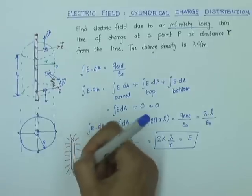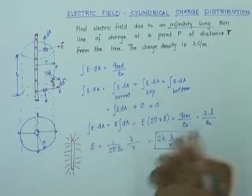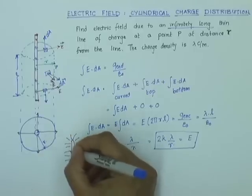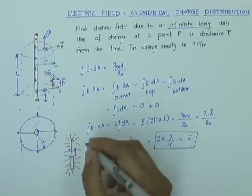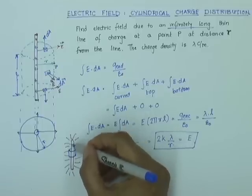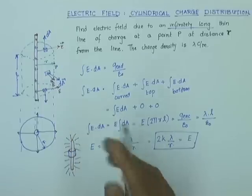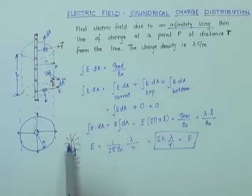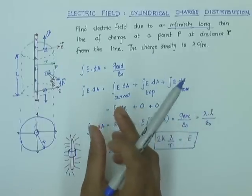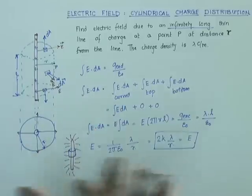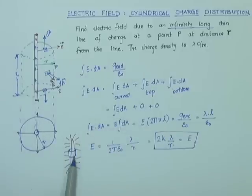However, if we have a sufficiently long wire — not necessarily infinitely long — we can use Gauss's Law over the center of the wire, which is quite far from the ends. This is a fair approximation: for a finite wire of considerable length, if we consider a small section near the middle that is well away from the ends, we can use this formula as a good approximation of the electric field at distance r from the wire.